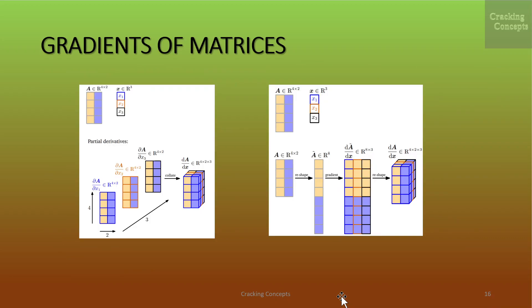Here we are visualizing the concept of gradient computation of a matrix with respect to a vector. We are interested in computing the gradient of matrix A of dimension 4×2 with respect to a vector x of dimension 3. The gradient dA/dx will belong to the dimension space 4×2×3. We follow two equivalent approaches: the first collects partial derivatives into a Jacobian tensor directly; the second flattens the matrix into a vector, computes the Jacobian matrix, and then reshapes it into a Jacobian tensor.